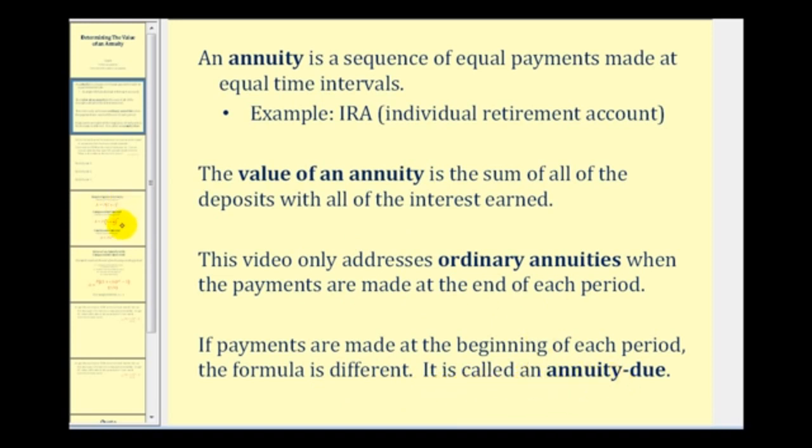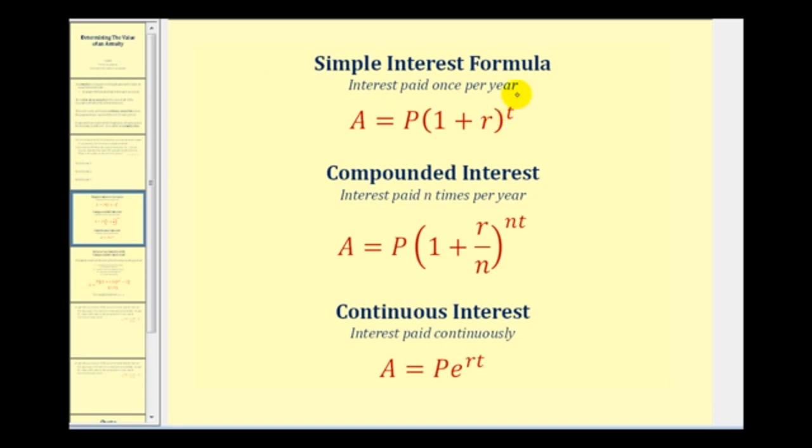Before we look at an example, let's review the three basic formulas used to calculate interest. For simple interest, interest is paid once per year. For compounded interest, the interest is paid n times per year. So if it's compounded monthly, n would be 12. Quarterly, n would be 4, and so on. And then for continuous interest, interest is paid continuously.